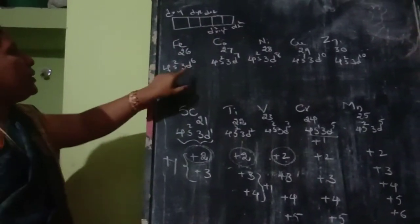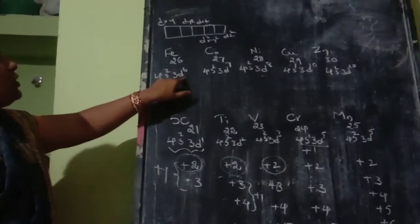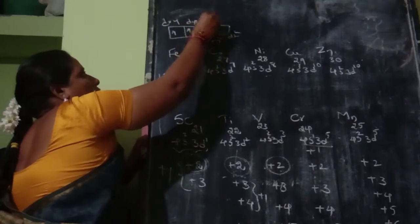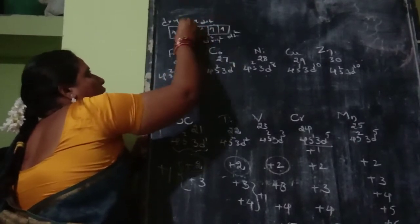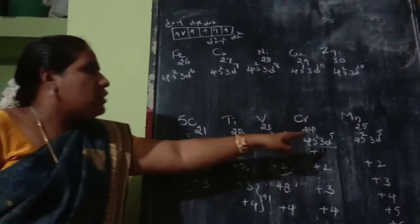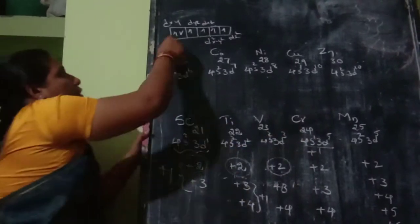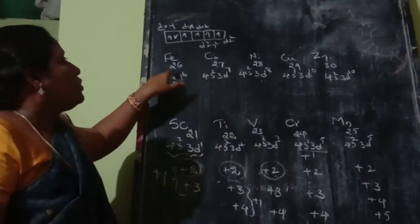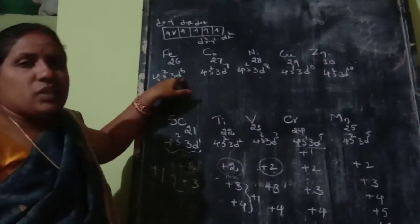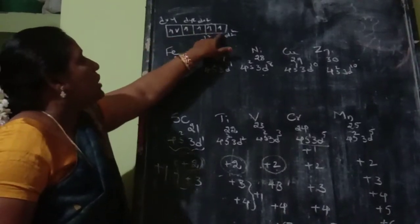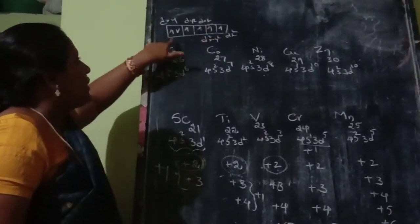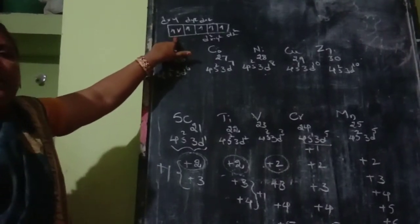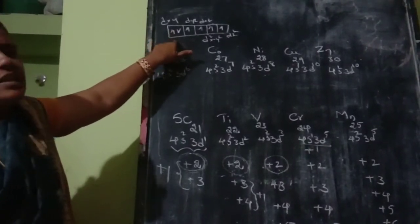In 5D orbitals with 6 electrons — iron has 3D6. After manganese (which has D5, with one electron in each orbital), iron adds a 6th electron, so pairing begins in the DXY orbital — one electron pairs up.